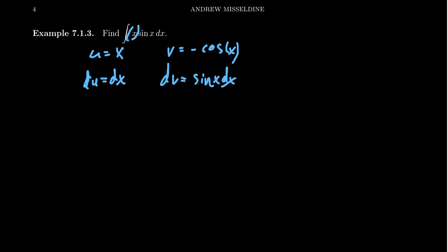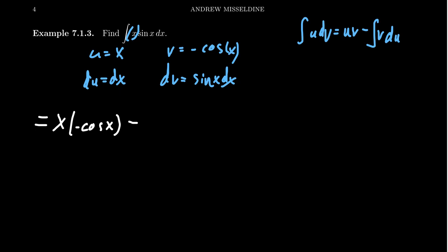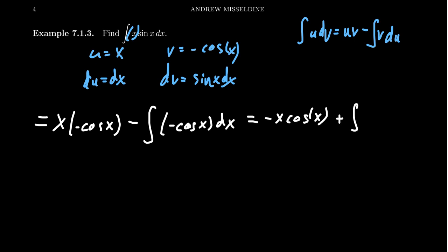Using that choice for integration by parts, remember the formula: the integral of u dv equals uv minus the integral of v du. Putting those parts together, we end up with x times negative cosine of x, minus the integral of v — which is negative cosine. We have to be very cautious here, because the derivative and anti-derivative of sine are very similar. Since we're taking anti-derivatives, v is negative cosine, then du is just dx. Simplifying, we get negative x cosine of x, and then a plus integral of cosine of x.